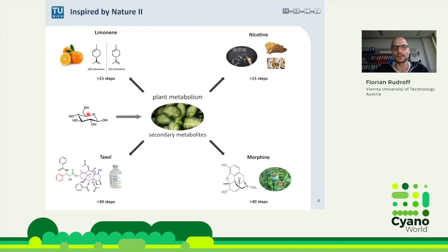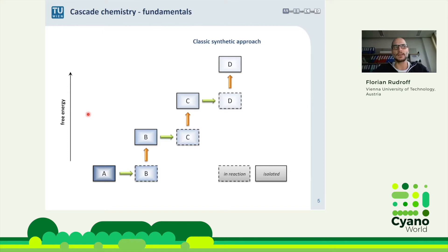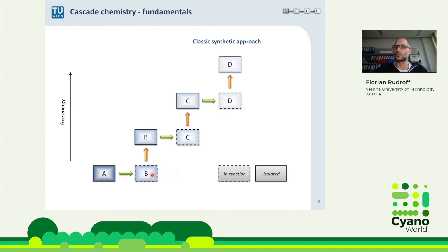Why do we want cascade-type reactions? In the classic chemical approach, going from A to B requires isolating and purifying each compound at every step — isolation, purification, reaction, again and again. That's a lot of work, a lot of waste generation, and that's what we don't want to do.